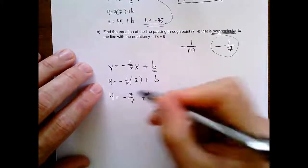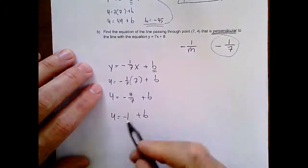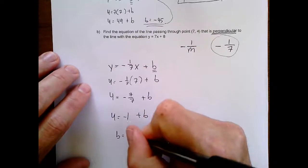4 equals negative 7 over 7 plus b. This is like negative 1. So 4 equals negative 1 plus b. We add 1 to both sides. b is 5.